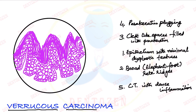We can show nuclei here because it is parakeratin. In some places we can show dysplastic features — dark staining nuclei may appear somewhere — and in other places it will be normal epithelium.